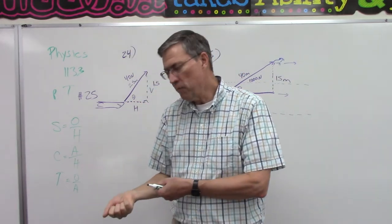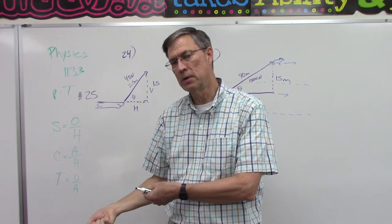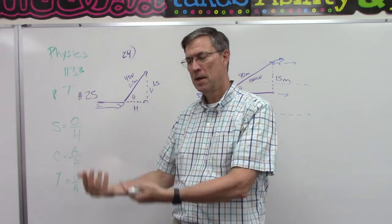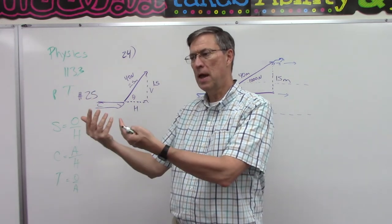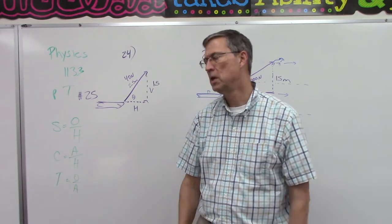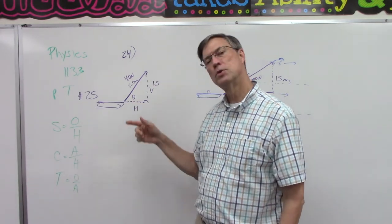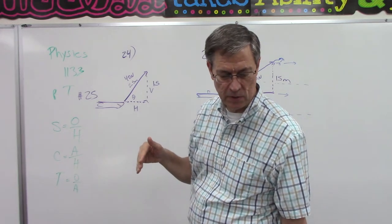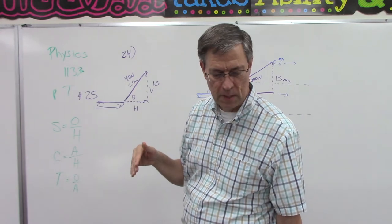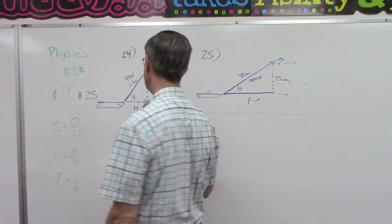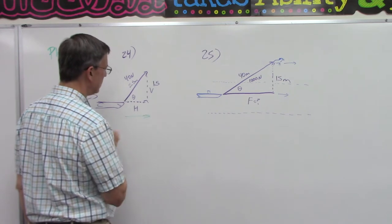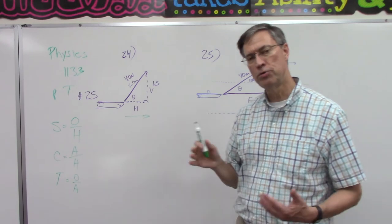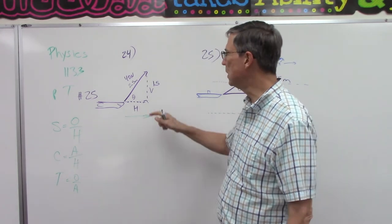part of the force that he's applying to the string, to the rope, is trying to pull the sled up. So part of it is trying to elevate it, and part of it is trying to pull it forward. We have to resolve it to find what are the two components. And the main thing that they want us to find here is the magnitude that is trying to pull it forward. So we're trying to solve for this part, the horizontal. So let me just talk you through it, and then I'm going to let you take it and run with it.